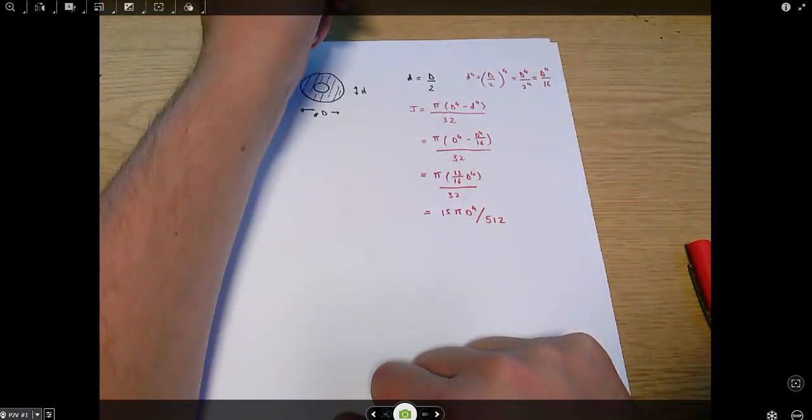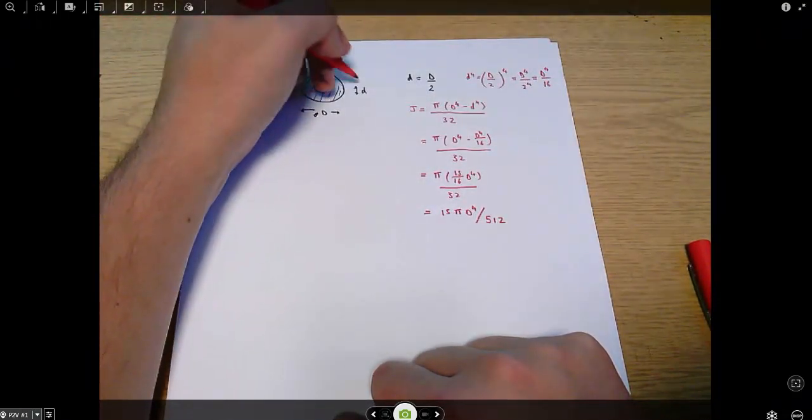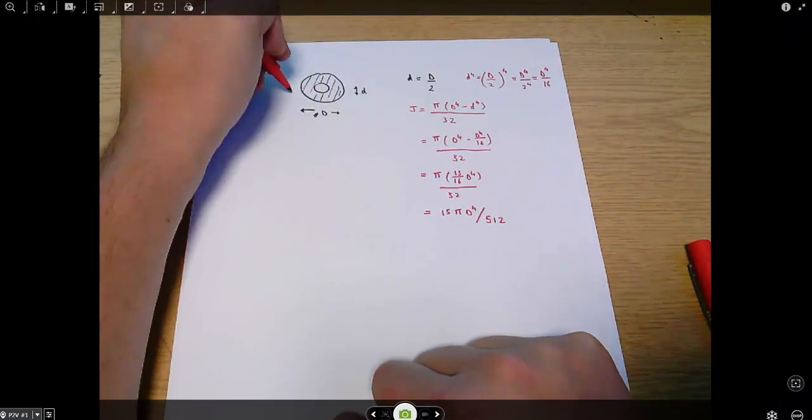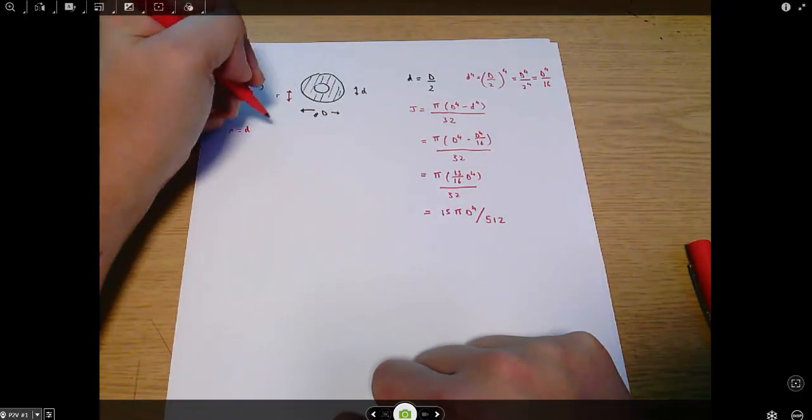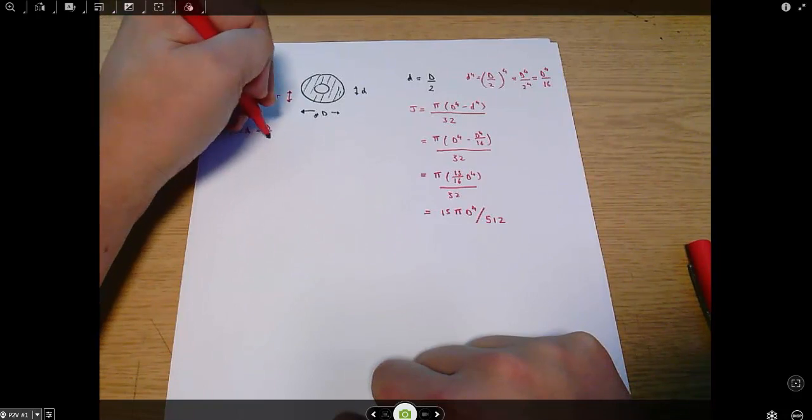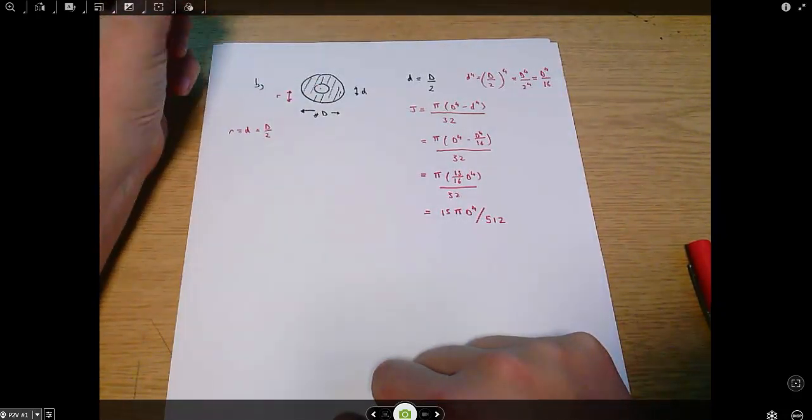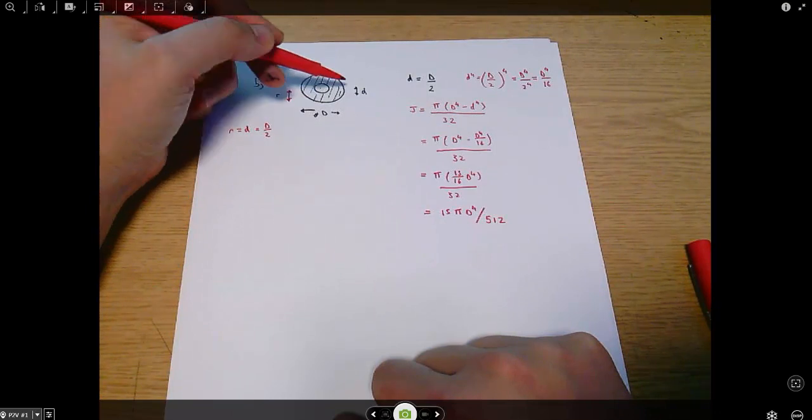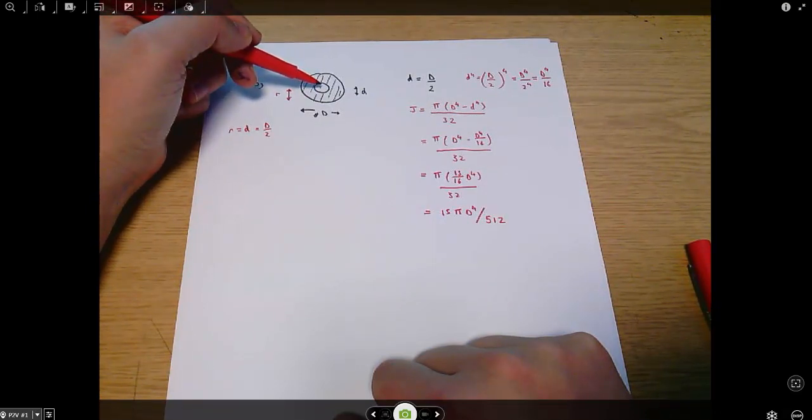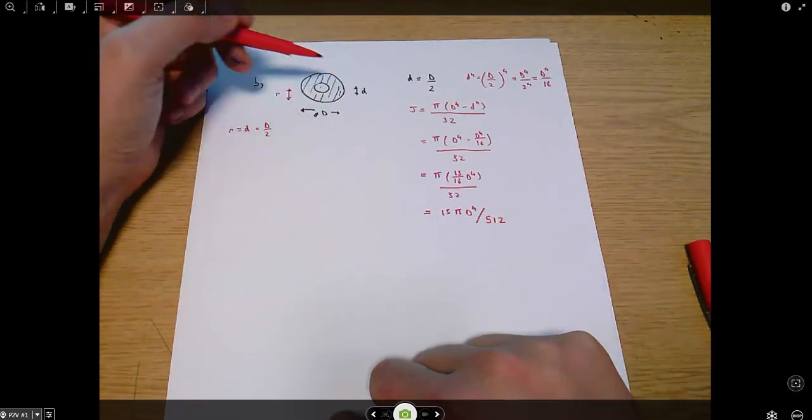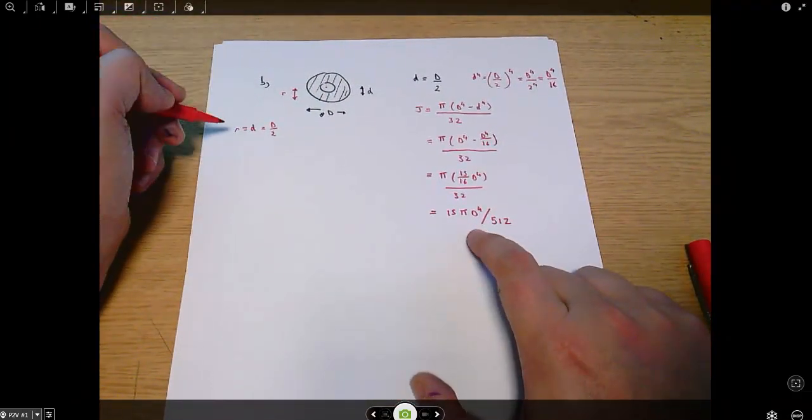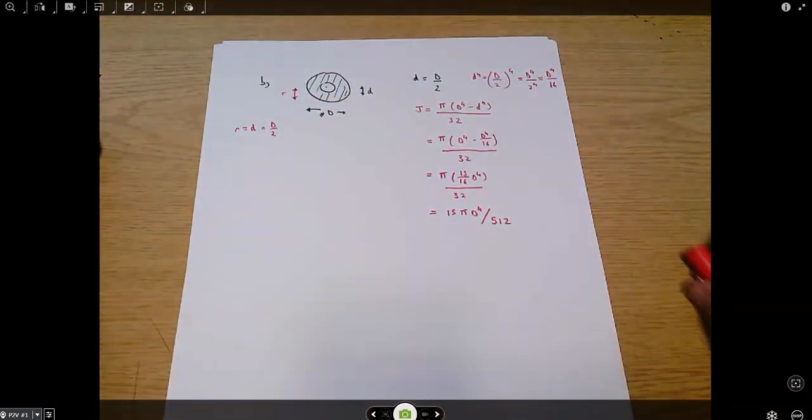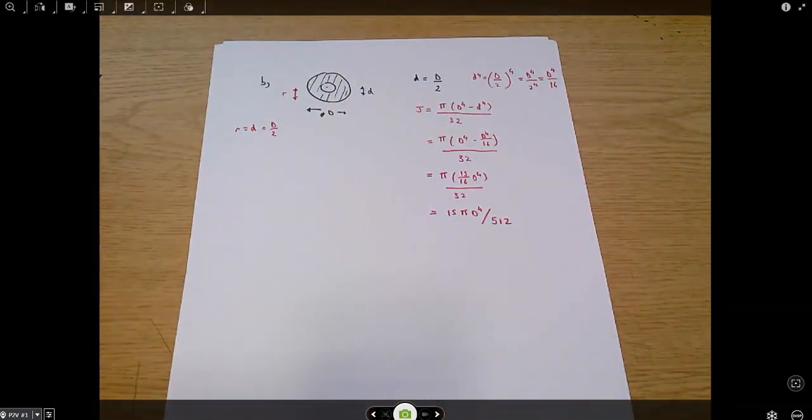Also, as before, we need to note that small r equals small d equals capital D over 2. The distance from the centre of the pipe to the outside of the pipe, r, is half of capital D, which is in fact the same as what we've got for small d. So that gets us our J and our R, and now we can do effectively the same calculations we did in part A.